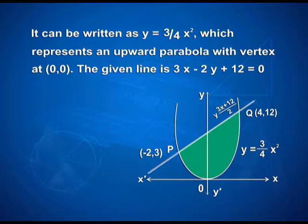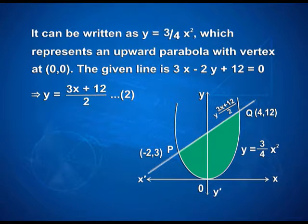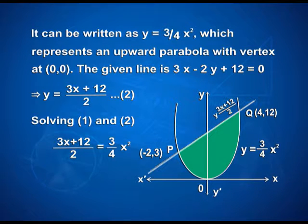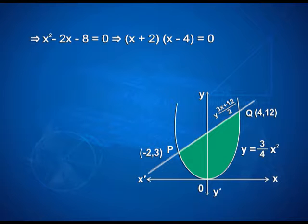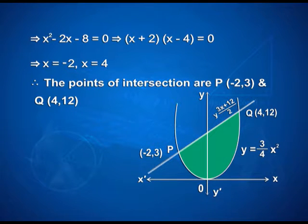The given line is 3x minus 2y plus 12 is equal to 0, therefore y is equal to (3x plus 12) upon 2. On solving the two equations, we get (3x plus 12)/2 equal to (3/4)x squared, which implies 6x plus 24 equals 3x squared. That gives x squared minus 2x minus 8 equals 0, which factorizes as (x plus 2)(x minus 4) equals 0, giving x equal to minus 2 and x equal to 4. Therefore, the points of intersection are P(-2, 3) and Q(4, 12).